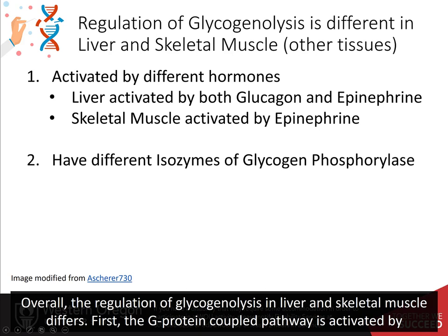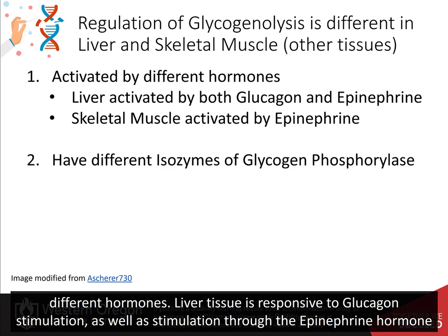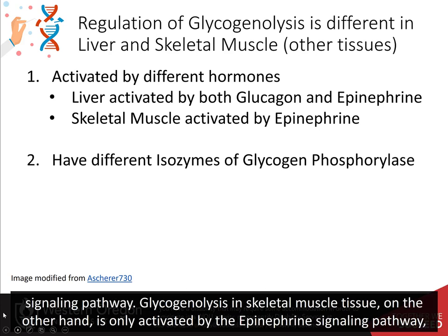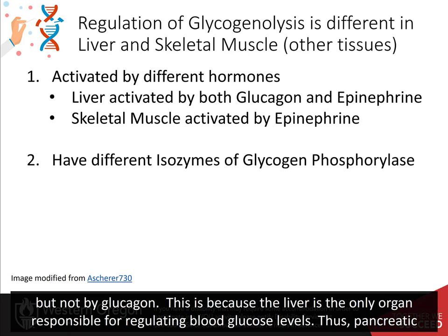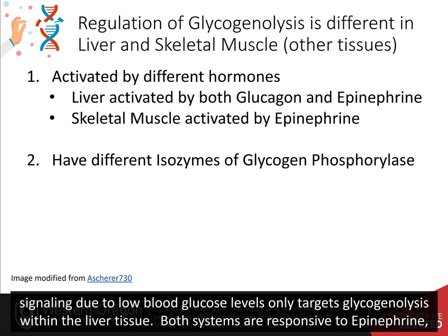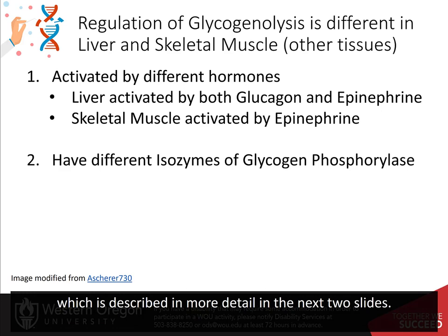Overall, the regulation of glycogenolysis in liver and skeletal muscle differs. First, the G-protein coupled pathway is activated by different hormones. Liver tissue is responsive to glucagon stimulation, as well as stimulation through the epinephrine hormone signaling pathway. Glycogenolysis in skeletal muscle tissue, on the other hand, is only activated by the epinephrine signaling pathway, but not by glucagon. This is because the liver is the only organ responsible for regulating blood glucose levels. Thus, pancreatic signaling due to low blood glucose levels only targets glycogenolysis within the liver tissue. Both systems are responsive to epinephrine, which is described in more detail in the next two slides.